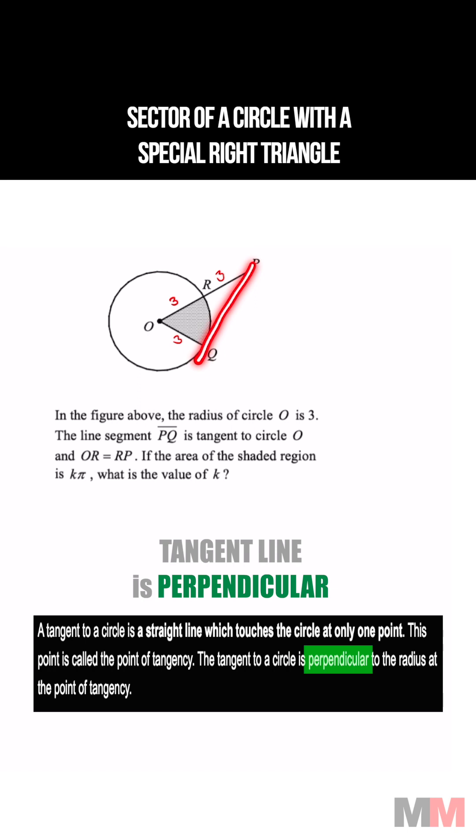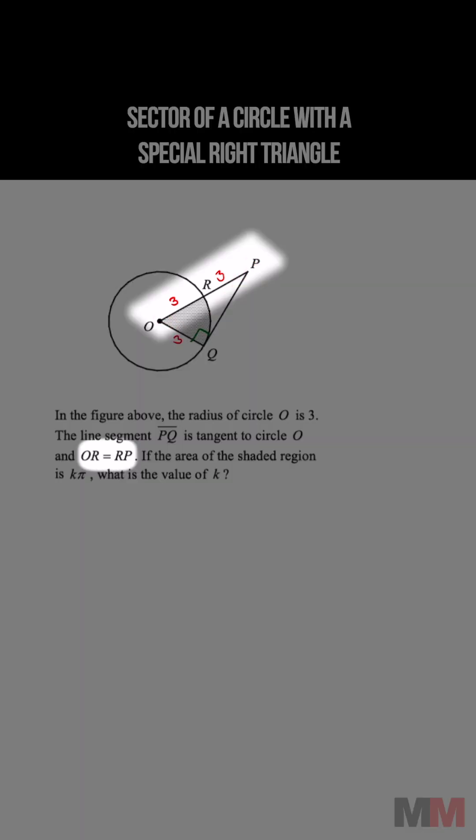If PQ is tangent to the circle O, then we got ourselves a 90 degree angle right here. That is saying that OP is going to equal 6 because all we have to do is add those lengths.